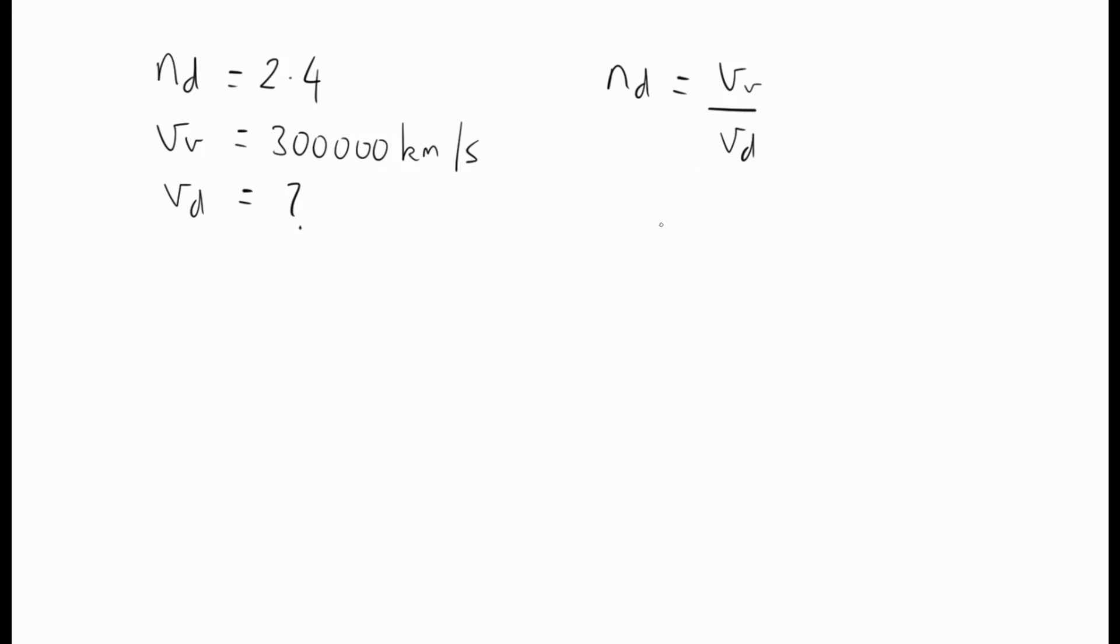We then need to rearrange that equation. So what we can do is we can bring the V for the diamond over here, multiply it by the refractive index. That would equal the speed of light in a vacuum. The next stage, to get the speed of light in a diamond by itself, we will end up getting the speed of light in a vacuum and we will divide that by the refractive index of the diamond.